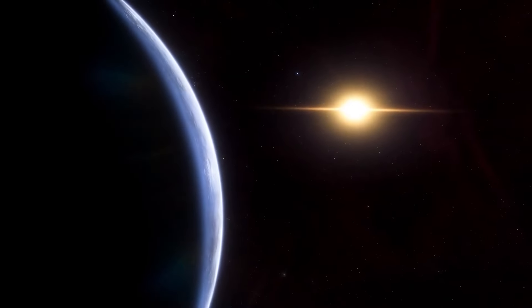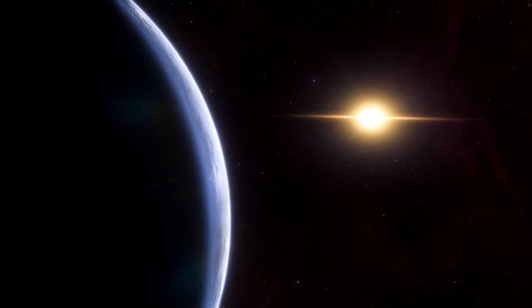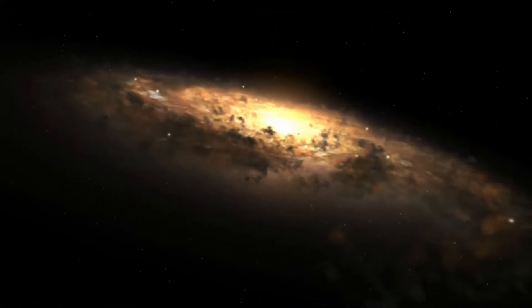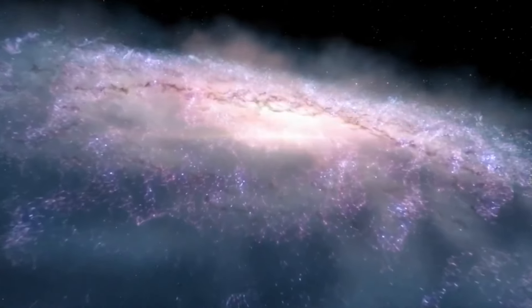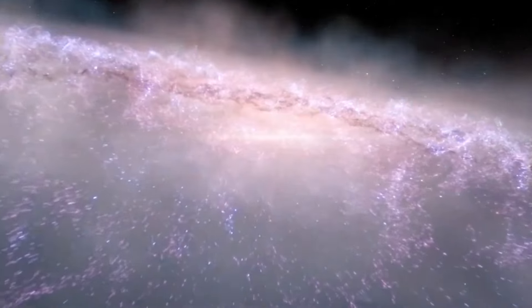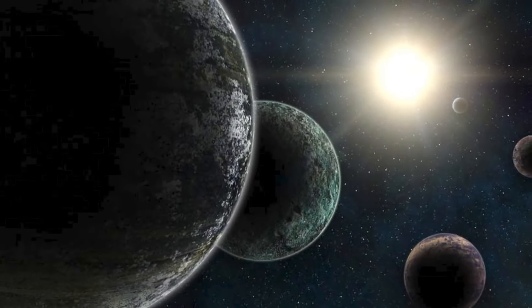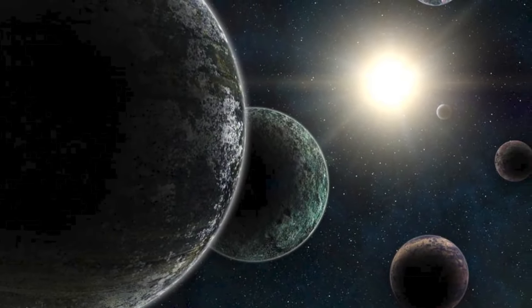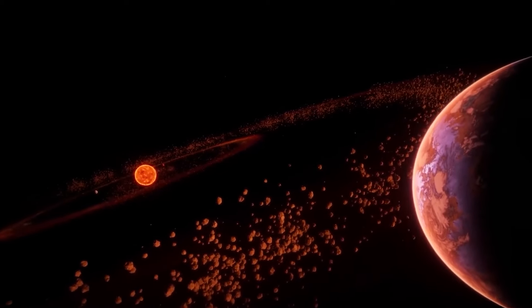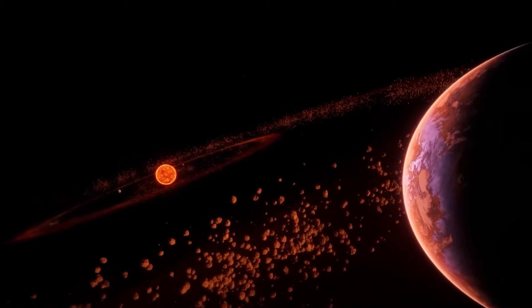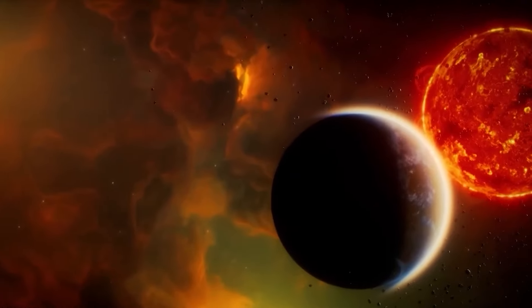The nearest star to Earth, Proxima Centauri, hosts a small rocky world in the habitable zone of that star. The habitable zone is important because that's the region where a planet can potentially host liquid water. Too close to a star and intense radiation will simply boil away any water. Too far from a star and the planet won't receive enough warmth and all of its water will just turn to ice.